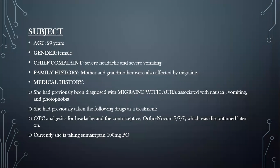The patient is 29 years old, female. Her chief complaint is severe headache and severe vomiting. Her family history shows that her mother and grandmother were affected by migraine. Her medical history shows she had previously been diagnosed with migraine with aura, associated with nausea, vomiting, and photophobia. She had previously taken OTC analgesics for headache and contraceptives, which were later discontinued due to their adverse effects.